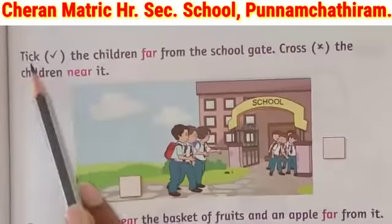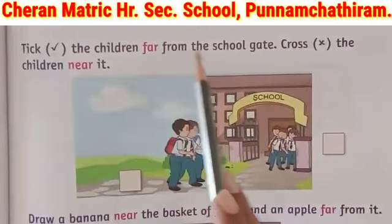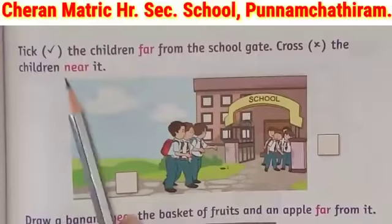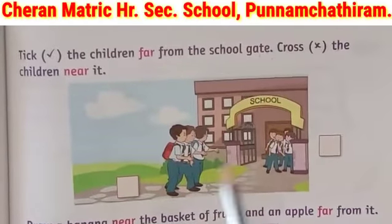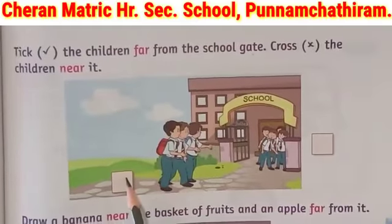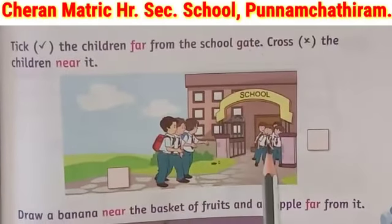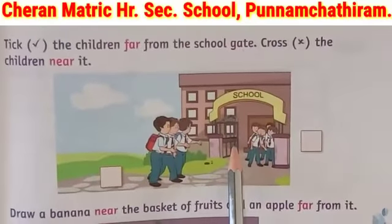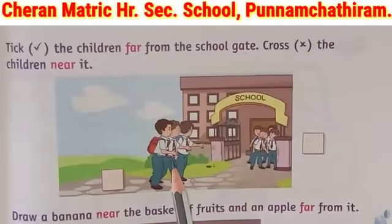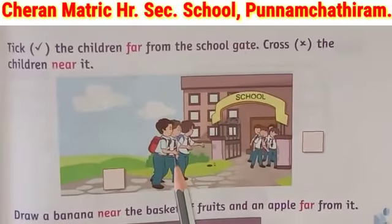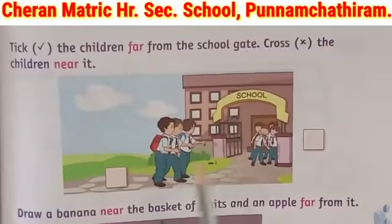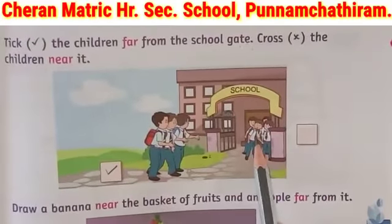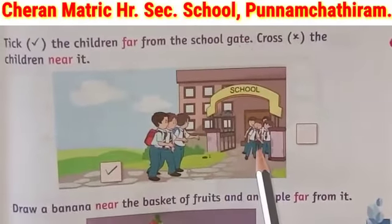See the next page — tick the children far from the school gate and cross the children near it. This is the gate and these are the children. These children are far from the gate, so we have to tick in the box. These children are near the gate, so we have to cross this box.